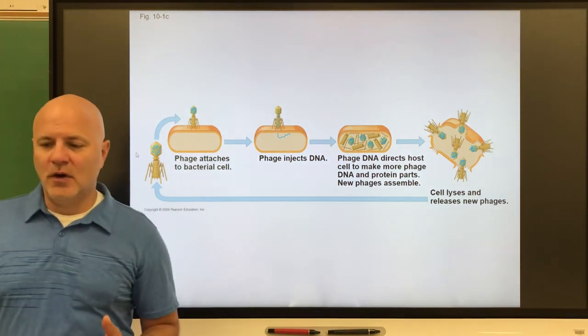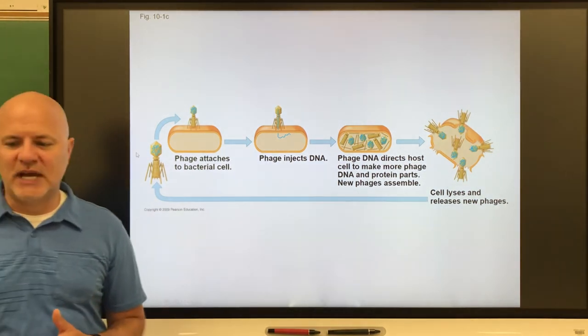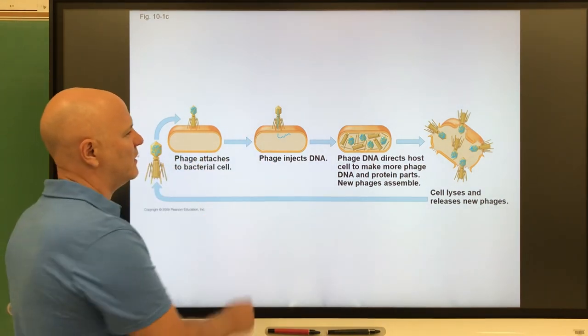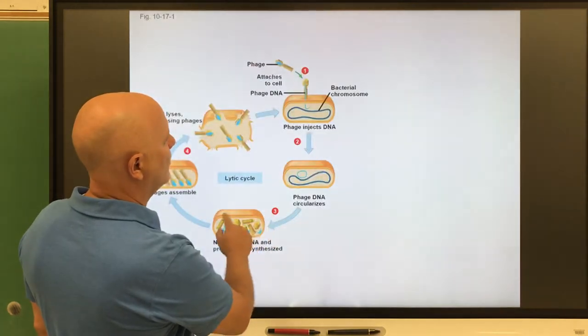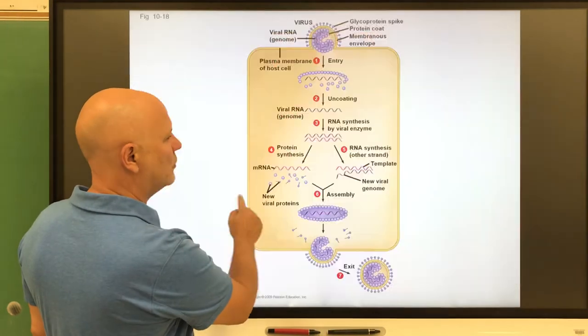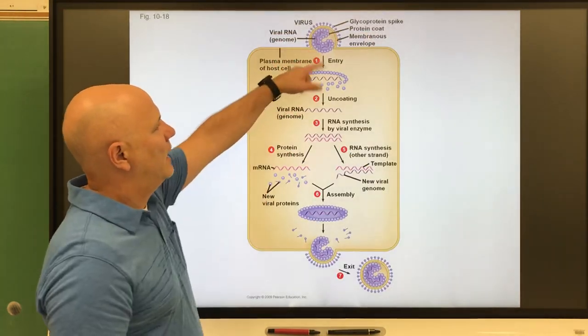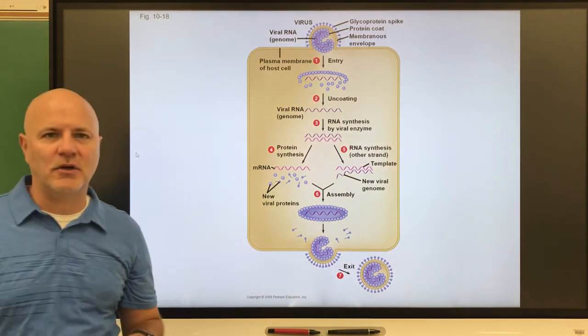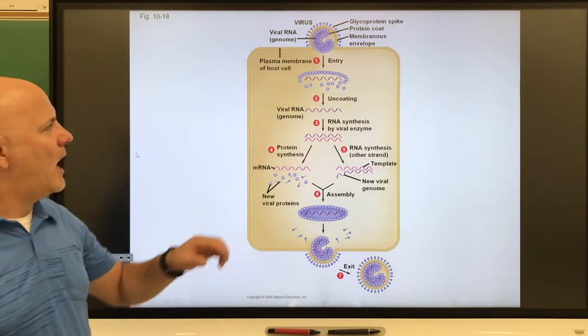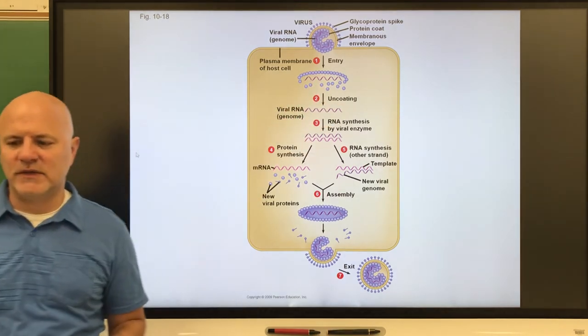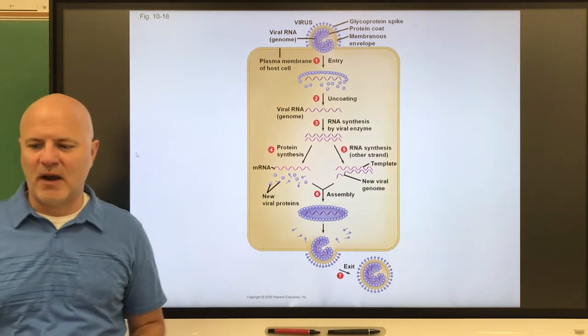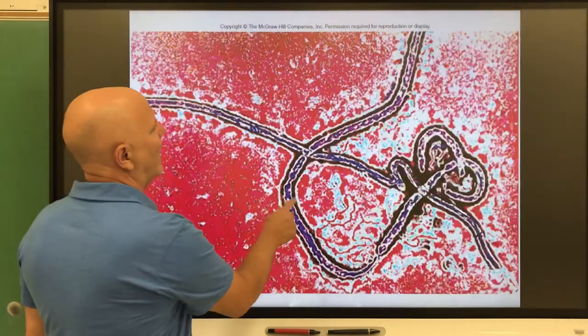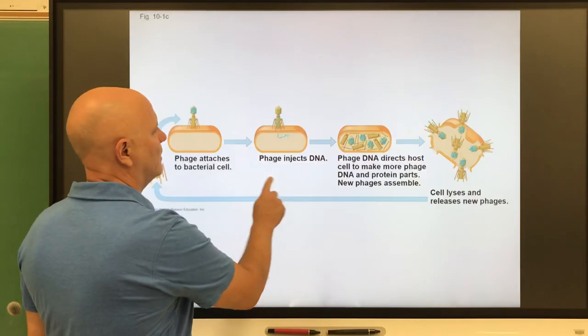Next is entry. The virus injects its genetic material. You can see that occurring there. Or in this picture, we see a different process where that virus is engulfed by endocytosis, and then the viral particles unwrap, releasing that viral genetic material. So two ways this can occur. Most of the time that virus just injects its genetic material.